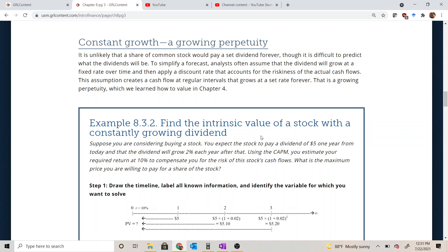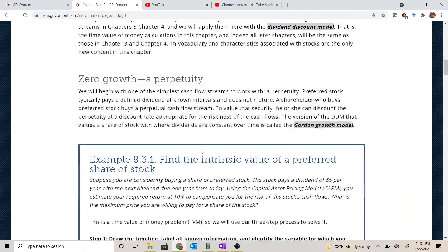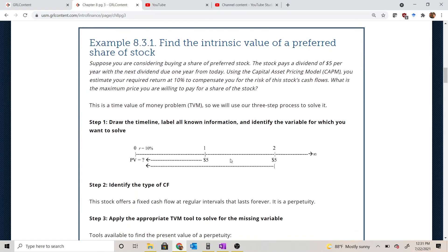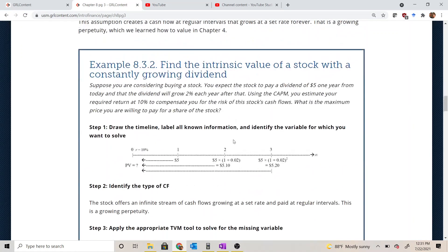And once we get that intrinsic value, we can compare that to the actual price and see if we expect the stock to pay us a rate of return that would compensate us for the risk. Example 8.3.1 was preferred stock using the Dividend Discount Model. With preferred stock, we usually just got a perpetuity, level cash flows at regular intervals that last forever. However, the next example, 8.3.2, is going to add just one more wrinkle to it, and that's a growth rate.